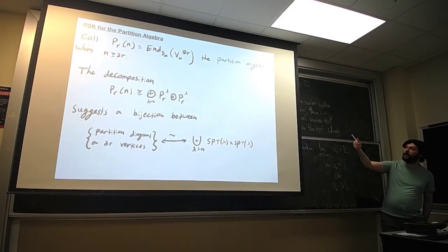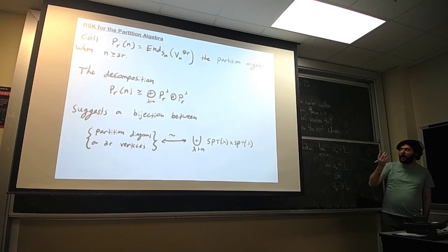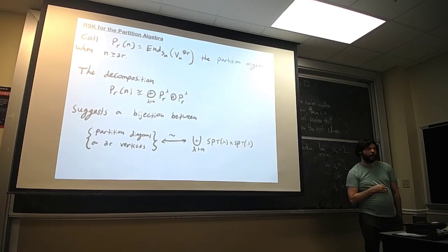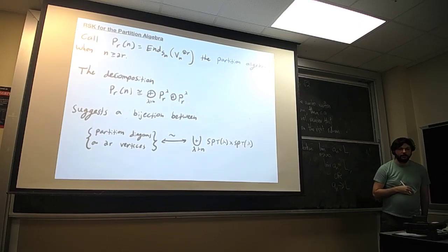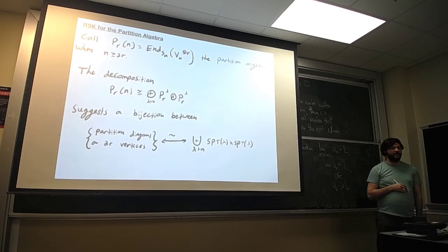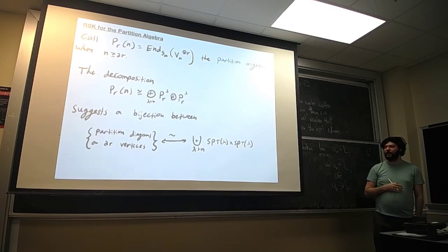I'll call this centralizer algebra Pr(n) the partition algebra, and I'll insist we think about when n is at least 2r. When n is not at least 2r, things don't quite match up — we end up with a nice semi-simple algebra. I can talk more about that later.